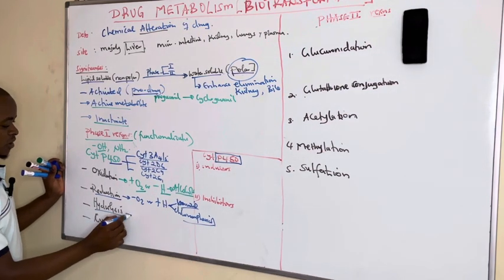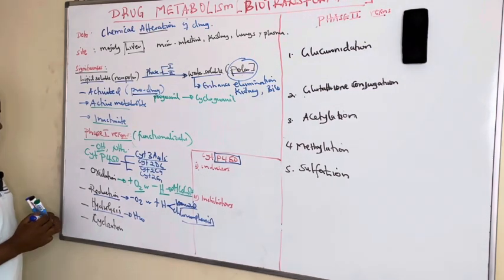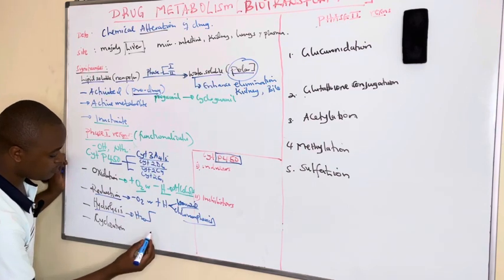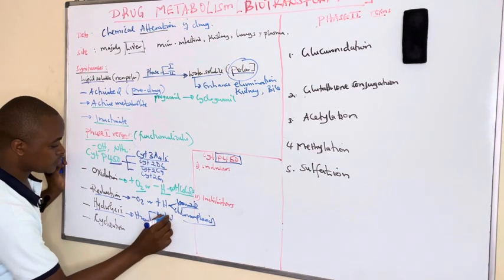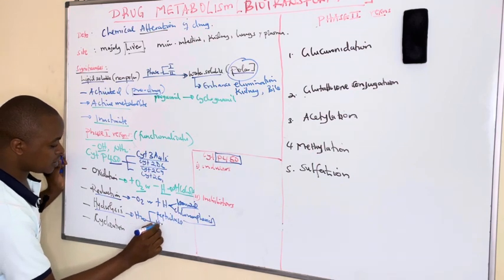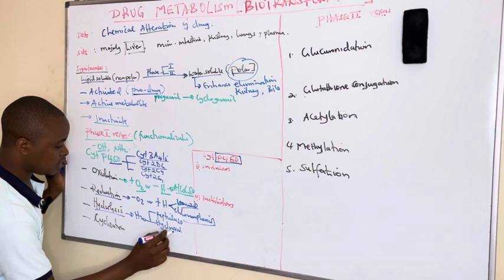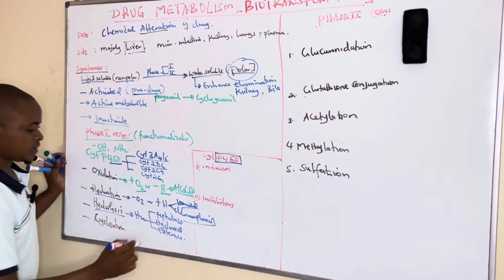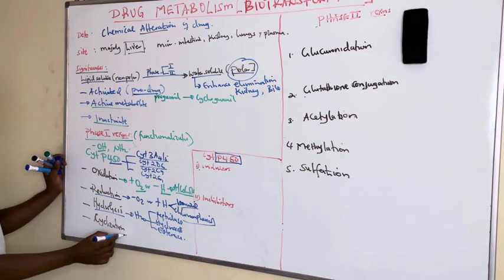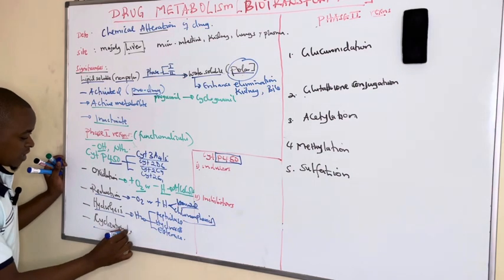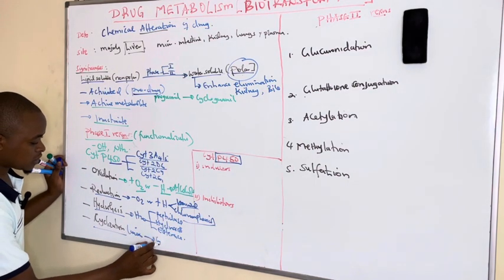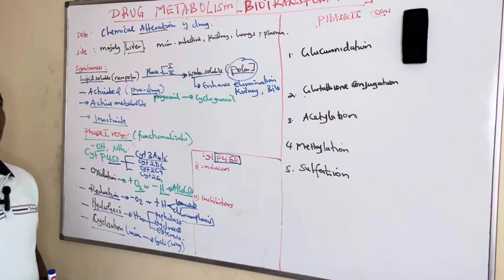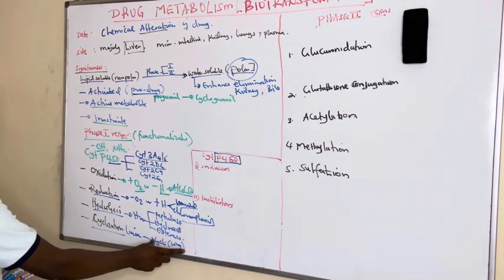Hydrolysis reaction involves the addition of water to functional groups to make them polar. The enzymes that catalyze this include esterases. Finally, the minor reaction is cyclization, whereby a linear drug is converted into a cyclic or ringed structure.